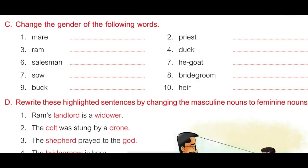Come to the next exercise: Change the gender of the following words. First, mare — answer is stallion, S-T-A-L-L-I-O-N. Second, priest — answer is priestess, P-R-I-E-S-T-E-S-S. Third, ram — answer is ewe, E-W-E. Fourth, duck — answer is drake, D-R-A-K-E. Fifth, salesman — answer is saleswoman, S-A-L-E-S-W-O-M-A-N.